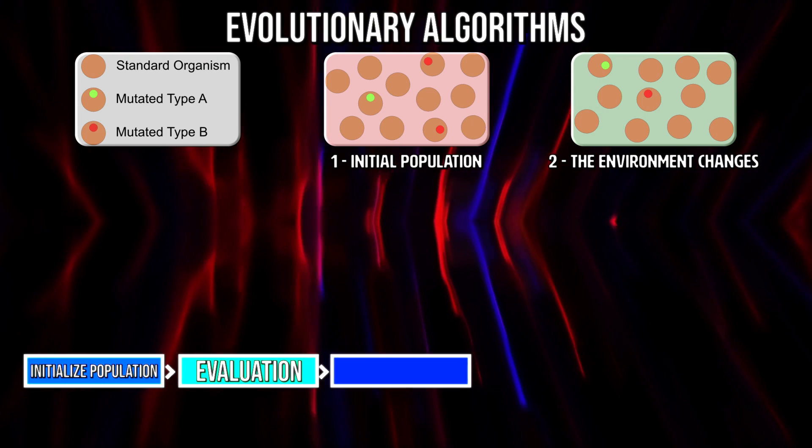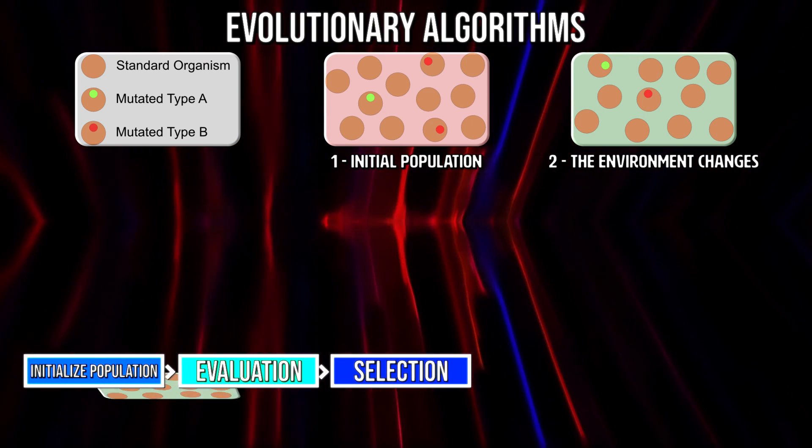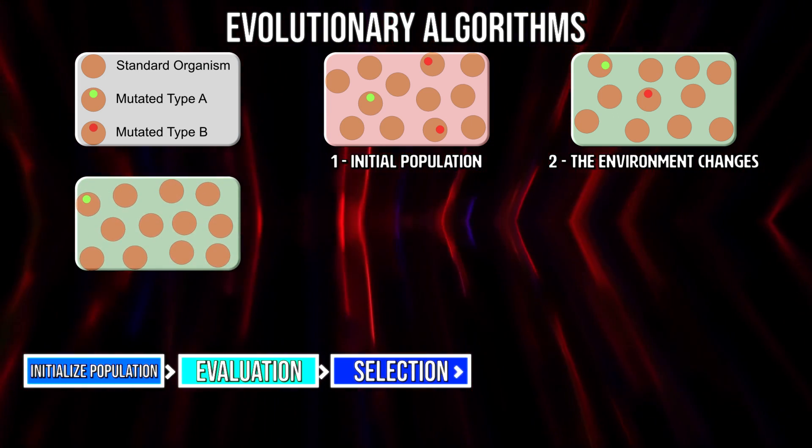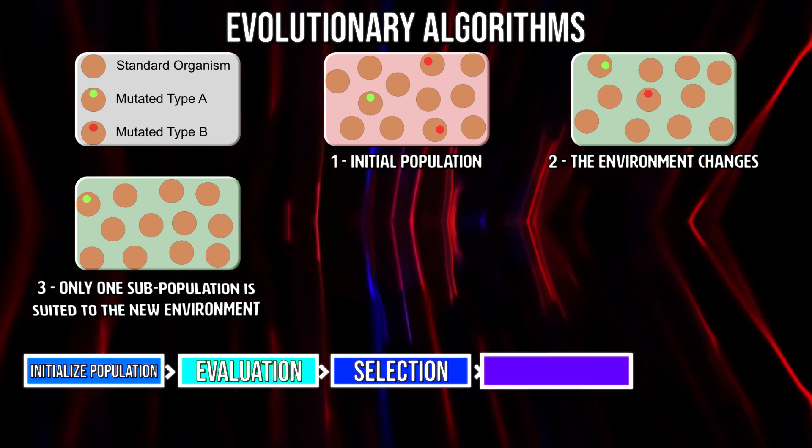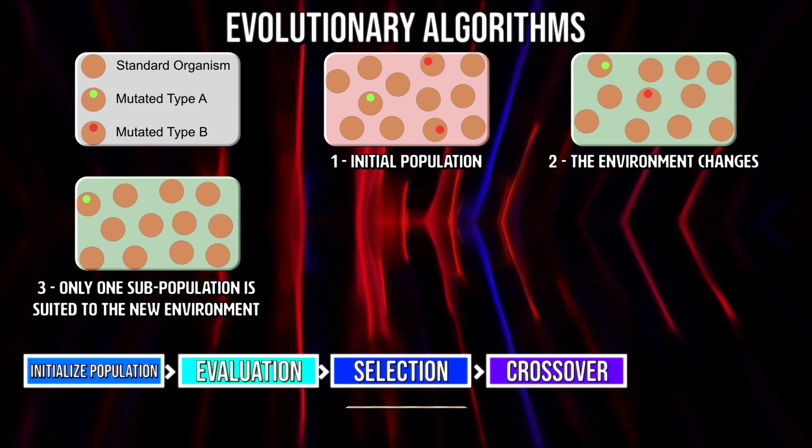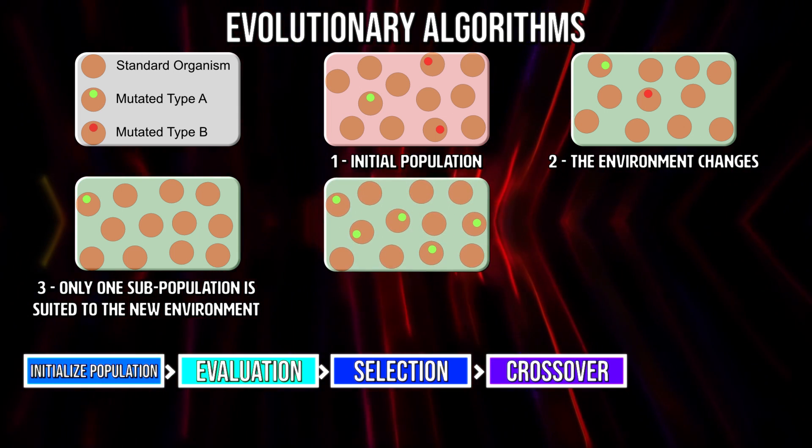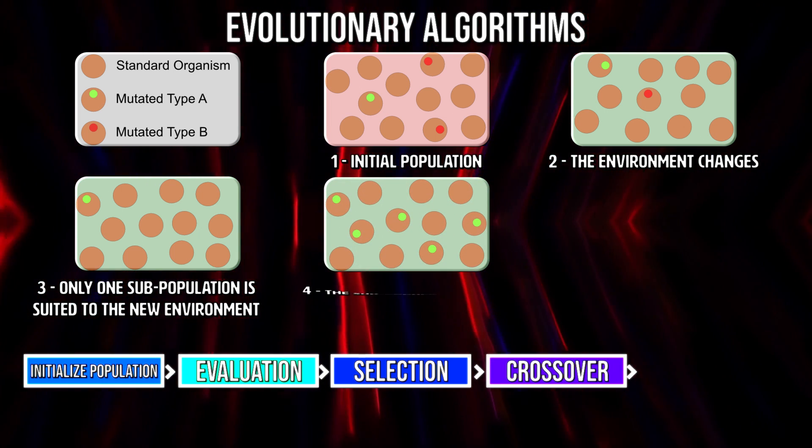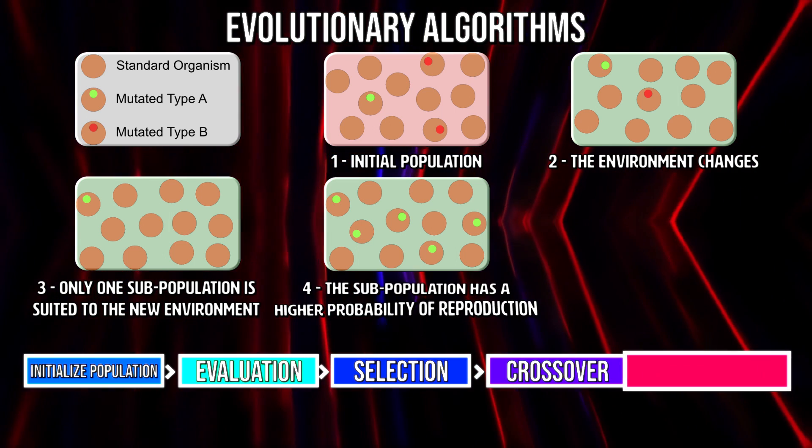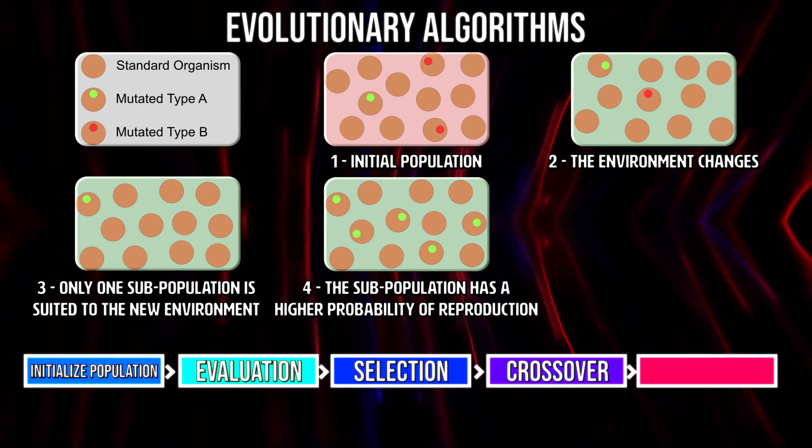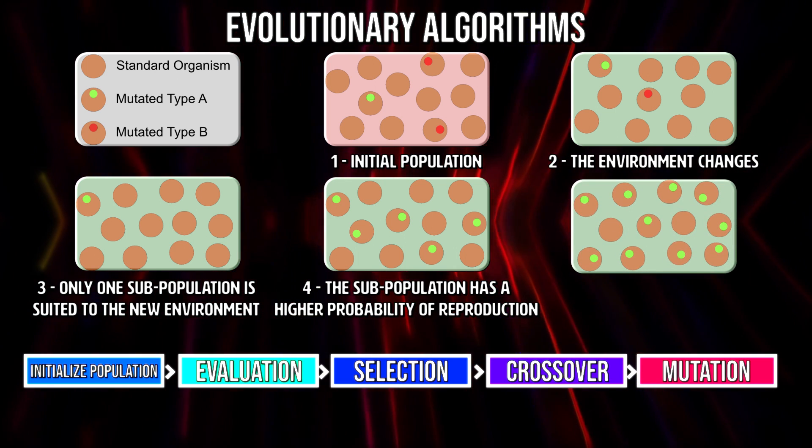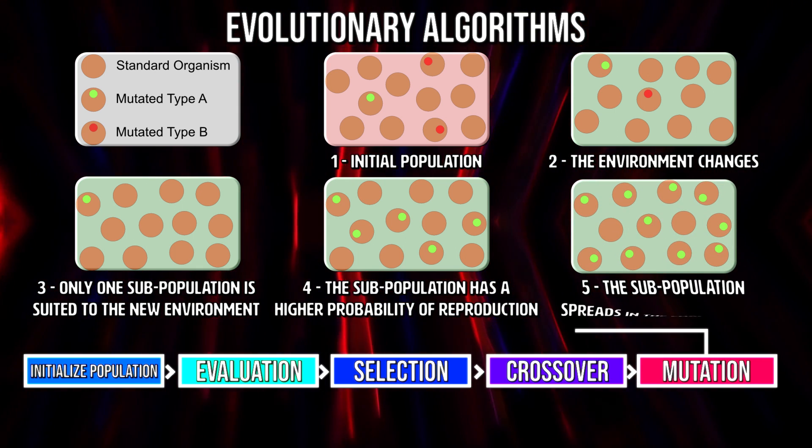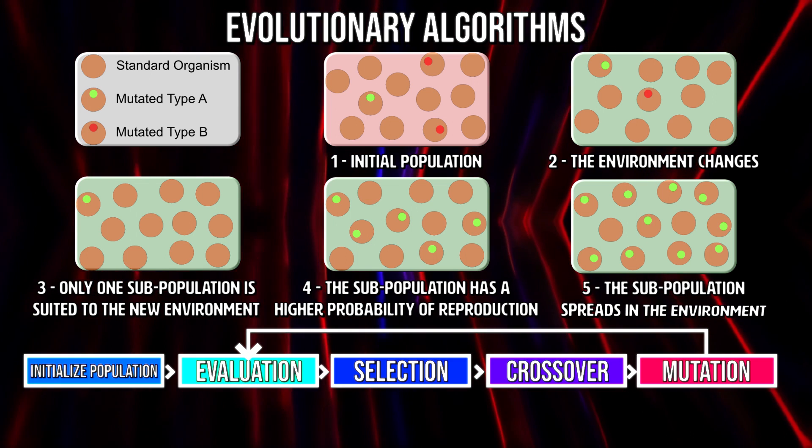Then, it will give each member a score based on an objective function. This score is called the fitness function. It's a measure of how well a member did in relation to the goal. Once all members are scored, the algorithm will select the highest scoring members by some predefined threshold and breed them to produce more members like them. Breeding involves some interpolation of each member's features that is application-specific.